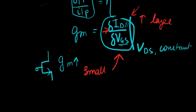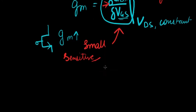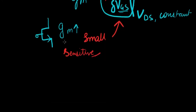And that's what we desire. Is that the MOSFET is really sensitive to the input that we are giving it. Right? So, GM is a measure of the sensitivity of a MOSFET. Alright?